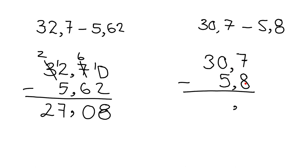Here we do 7 minus 8. We can't do that, so we have to go over here to try and get one. But here there's zero, so we can't get anything from there. We have to go over to here to get one.